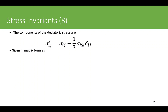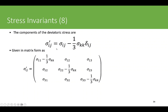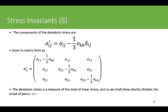Written in matrix form, the deviatoric stress has diagonal entries such as sigma_11 minus the hydrostatic term, while the off-diagonal entries (like sigma_12, sigma_13) remain unchanged since delta_ij is zero for off-diagonal elements. The deviatoric stress is essentially a measure of the level of shear stress — it captures the distortional effect — and we will shortly see that it is this deviatoric stress that dictates the onset of plastic deformation.